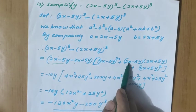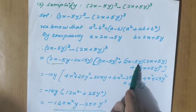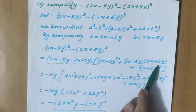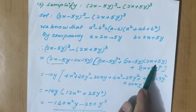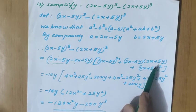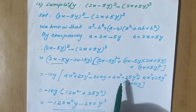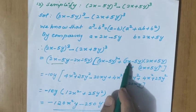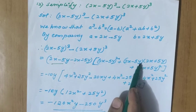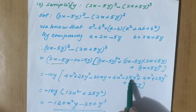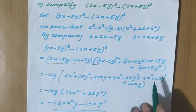Now in the middle term, one is a minus b and the other is a plus b. So a minus b into a plus b — what is the formula? It is a square minus b square. So a square is 2x whole square, b square is 5y whole square, that means 4x square minus 25y square.